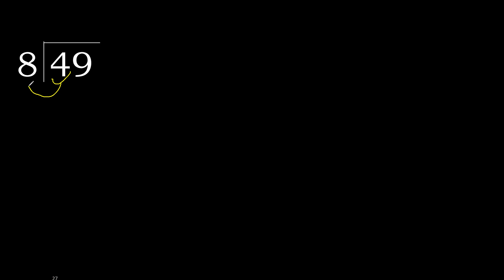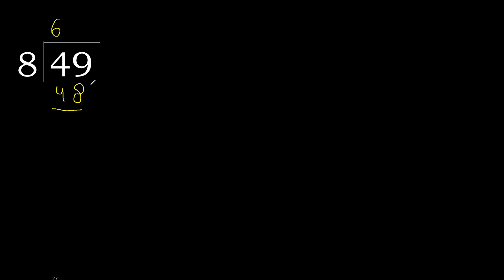49 divided by 8. 4 is less, therefore next digit. 49 is not less, therefore with 49, multiply 8 by which number is nearest to 49 but not greater. 8 multiplied by 7 is greater. 8 multiplied by 6 is 48, which is not greater. Subtract 1 remainder.